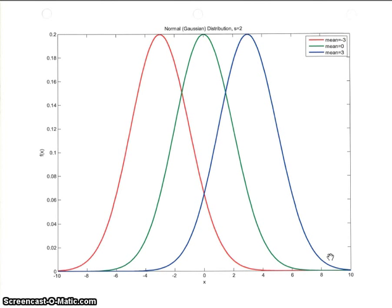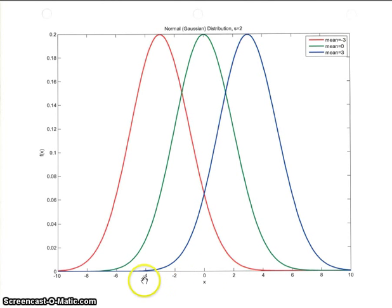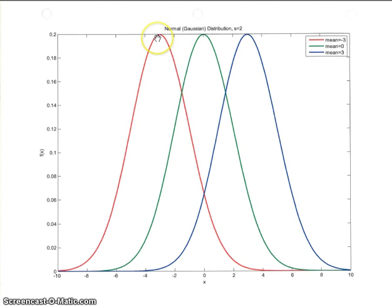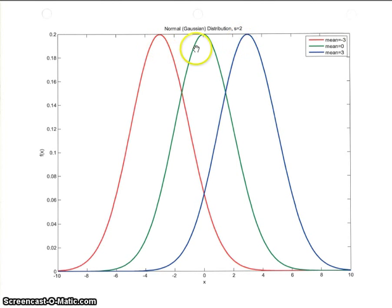Let's look at some plots of the Gaussian random variable. I set the standard deviation sigma equal to 2 and varied the mean. The red one has a mean of minus 3 and peaks right there at minus 3 — this is what's called a bell curve. It is exactly symmetric on either side of the mean and peaks at that mean value. For mean equal to 0, the peak moves to x equals 0, and the blue curve has mean equal to 3. So the mean just shifts the function right or left.